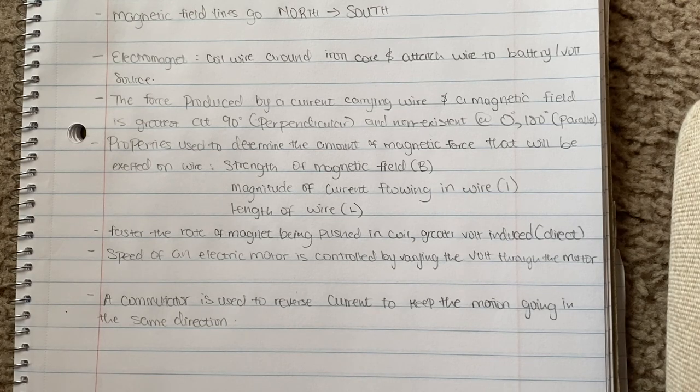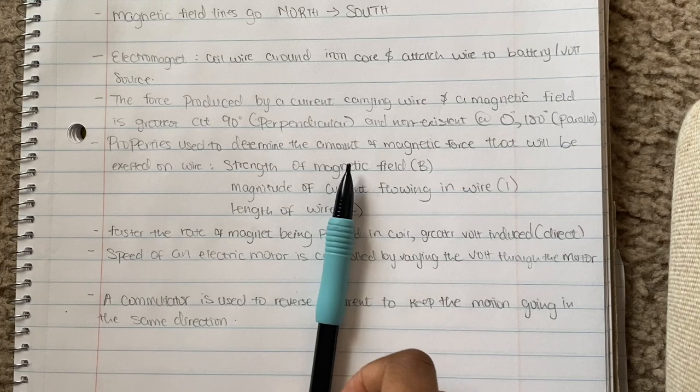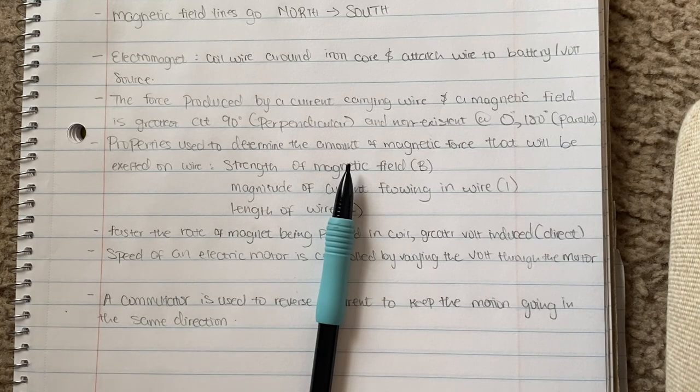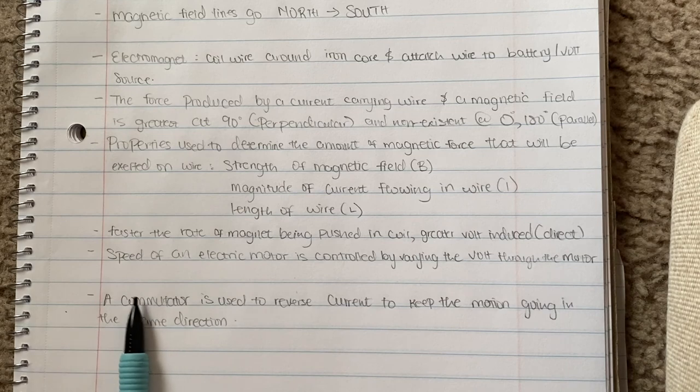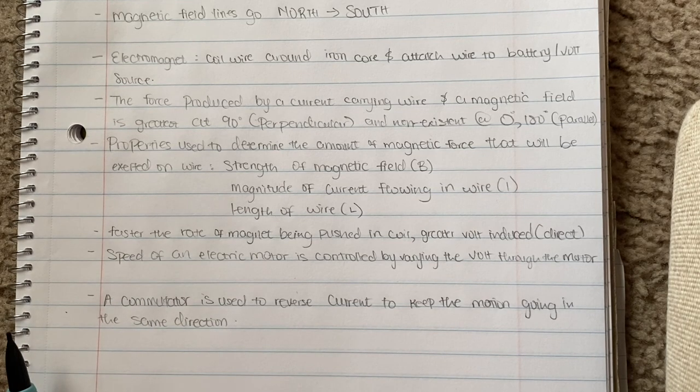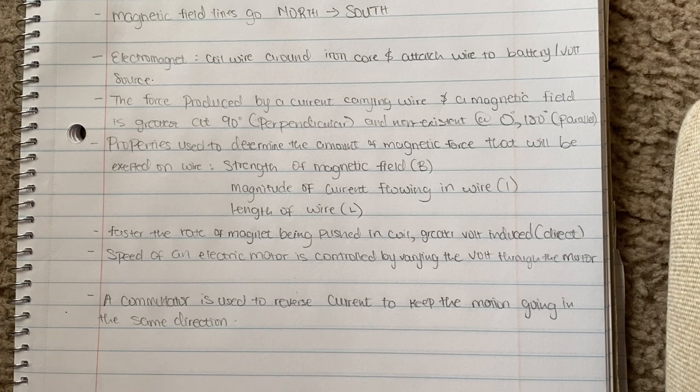Last but not least, in the generator, the commutator is used to reverse current to keep motion going in the same direction. I believe that if you do not have a commutator, it would only change positions one time and stop. For example, you have those little fans that rotate continuously. If you didn't have a commutator, your fan would go one time and just stop. Your commutator is the thing that reverses the current to allow your fan to continuously move in a circle to produce air. That is it. I hope the video wasn't too messy and all over the place and I really do hope that it helped. I hope to see you guys in the next one. Bye guys.